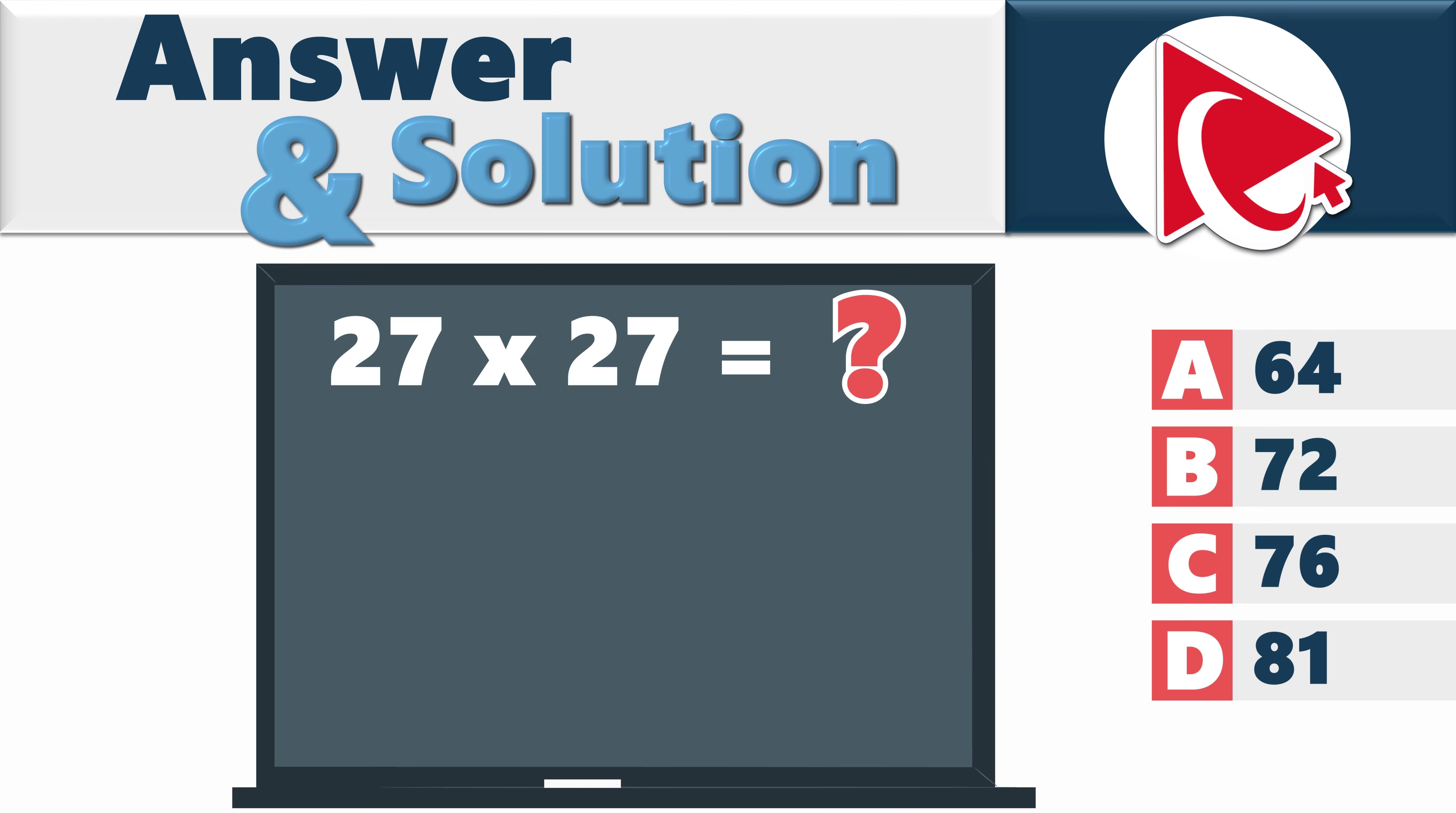So the missing number could be calculated as (2 + 7) multiplied by (2 + 7), which would equal 9 multiplied by 9, or 9 squared, and would be equal to 81. So the correct answer here is choice D: 81.